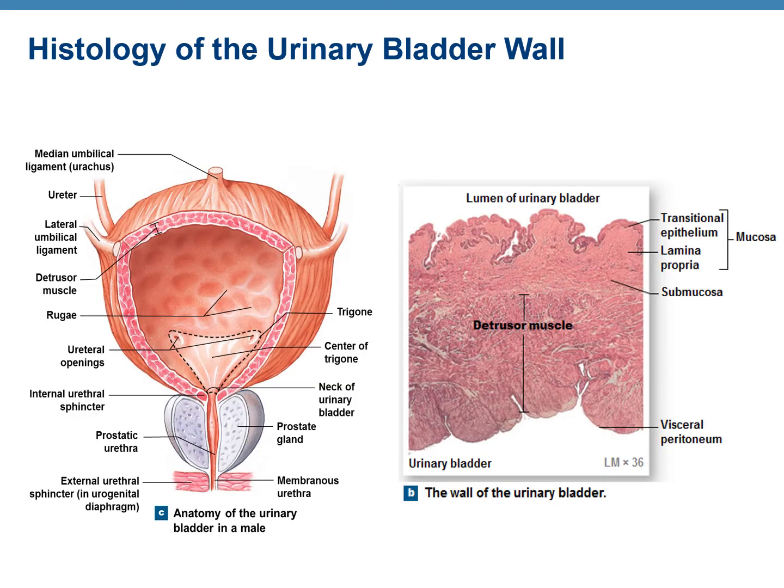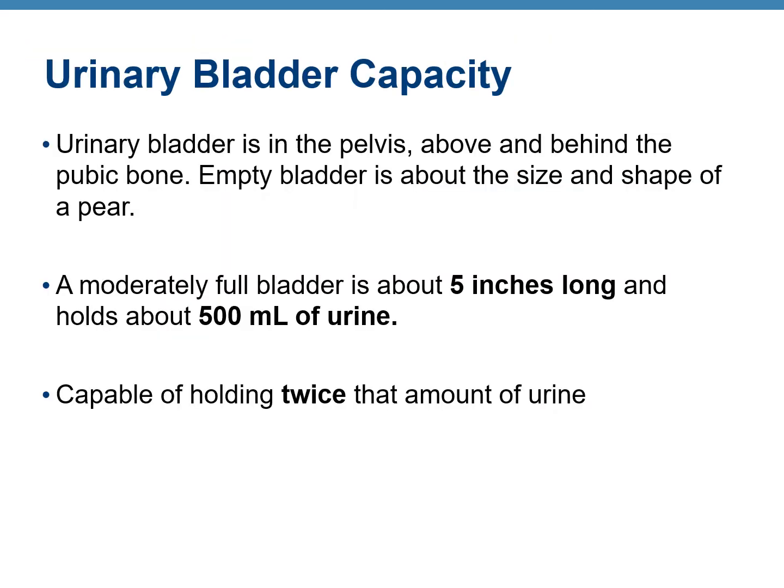This figure shows the histology of the urinary bladder wall. The urinary bladder is about the size and shape of a pear. When moderately full it is five inches long and can hold up to 500 milliliters of urine. However, if required it can hold up to twice that amount — one liter of urine.